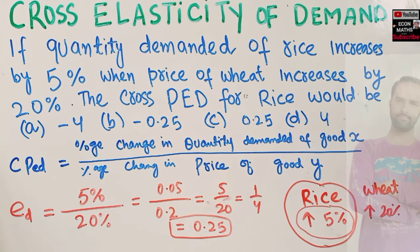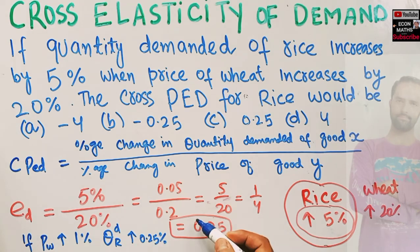How do we interpret this? Simple - it says if price of wheat increases by 1%, quantity demanded of rice will increase by 0.25%. This is how we interpret the cross price elasticity number.